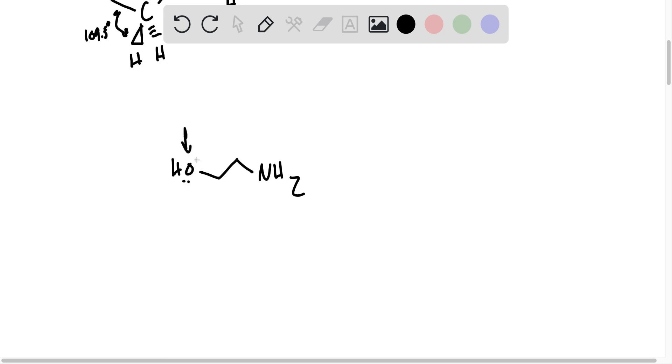This oxygen has two lone pairs, therefore it's got four regions, four electron regions. It's sp3 hybridized, which means 109.5 degree bond angles. This carbon has two hydrogen bonds, or two hydrogens bound to it. So this is also four bonds, that's sp3.